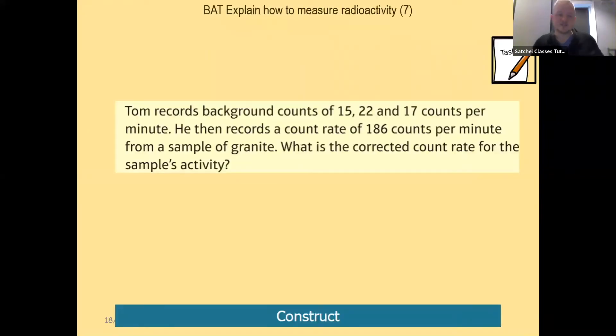So here's an example question. Tom records background counts of 15, 22, and 17 counts per minute. He then records a count rate of 186 counts per minute from a sample of granite. What is the corrected count rate for the sample's activity? Now this is important. Corrected count is something that goes beyond just counting, but we've got three counts per minute recorded by Tom. This is just the background.